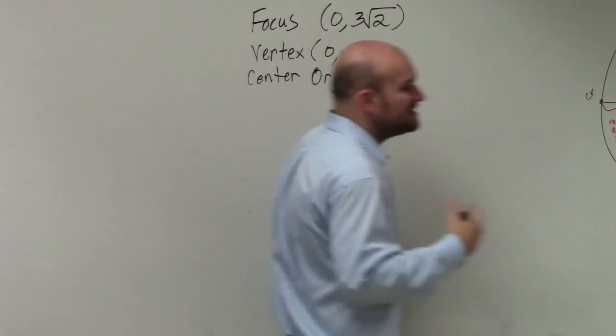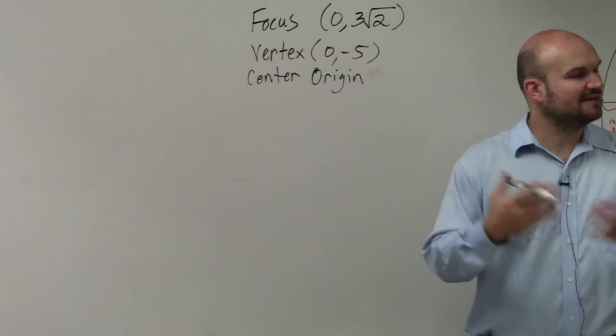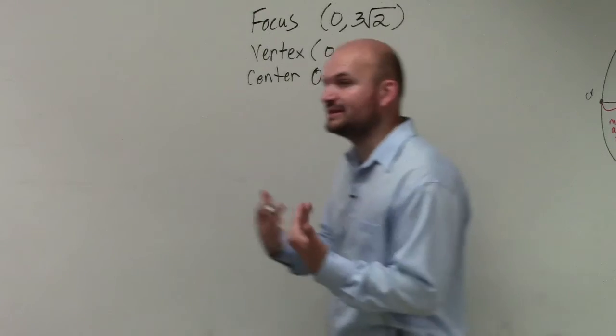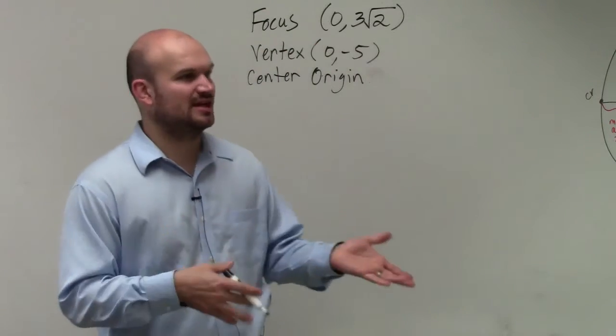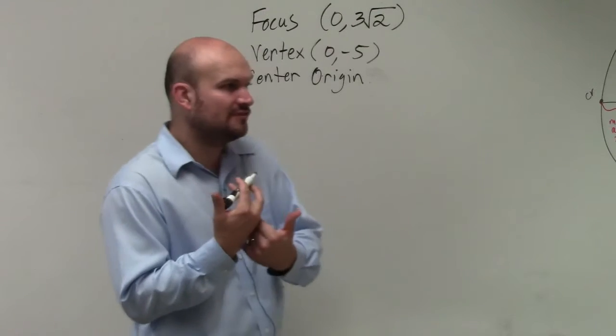Now, the difference on this one is rather than giving you two foci or giving you the vertices, they've given us one point. But fortunately, since we know what the center is, we can identify what the other one is. And we don't really need to. We just need to find the value of a and we need to find the value of b.